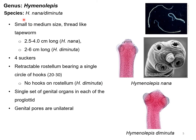Looking at the morphological features of Hymenolepis nana or Hymenolepis diminuta, you can see a tiny thread-like structure — these are actually the parasites. In the picture you can see there are four suckers, and on top of this structure there is a cone-shaped structure also known as the rostellum. If you look closely, you can see tiny hooks on it.